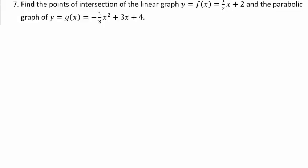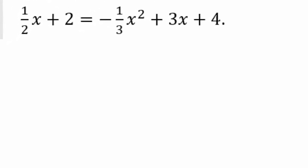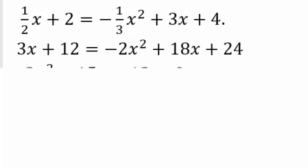In this next one, you're asked to find points of intersection for the linear graph and the parabola. To find the intersection of the parabolic function and linear function, you want the y-coordinates equal. So set them equal to each other: 1 half x plus 2 equals negative 1 third x squared plus 3x plus 4. Bring everything to the same side and eliminate the denominator by multiplying everything by 6. That gives you the quadratic equation 2x squared minus 15x minus 12 equals 0. Solve that to get your x-coordinates.